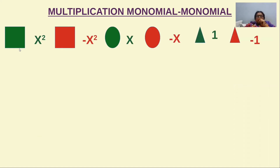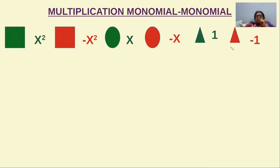The green colored square, circle, and triangle flashcards represent x², x, and 1. The red colored square and triangle represent minus x², minus x, and minus 1.